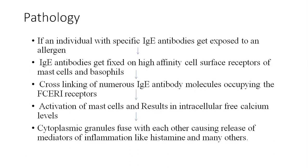Pathology of anaphylaxis: if an individual with a specific IgE antibody gets exposure to an allergen, the IgE antibody fixes on high-affinity cell surface receptors of mast cells and basophils. Cross-linkage of numerous IgE antibody molecules occupying the FcεRI receptor causes activation of mast cells, resulting in increased intracellular free calcium level. Cytoplasmic granules fuse with each other, causing release of mediators of inflammation like histamine and many others.